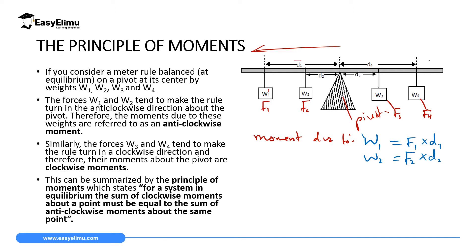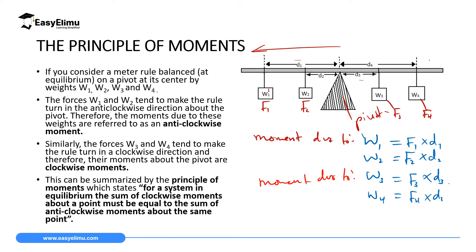The moment due to W3, which is on the right-hand side with distance d3, is F3 times d3. Then for W4, the moment due to W4 is F4 times d4.